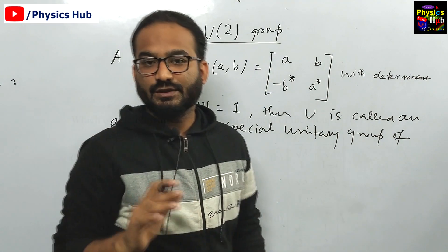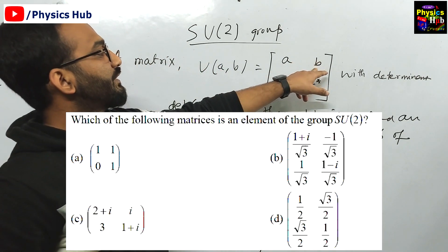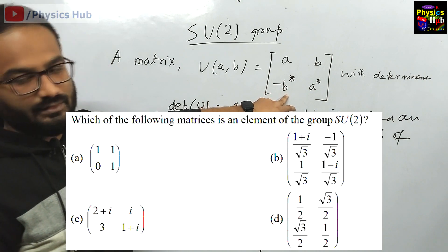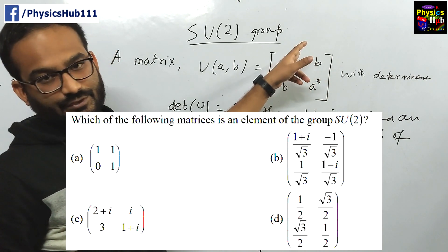Then we can say U is called an element of the special unitary group of order 2. Now in the given question, you are given 4 matrices. This element B and B star. B star is the complex conjugate of B. Similarly, A star is the complex conjugate of A.